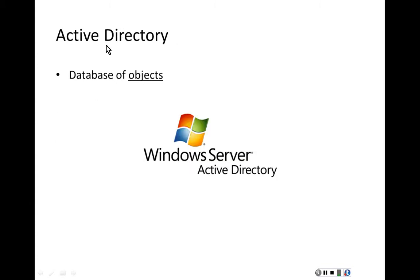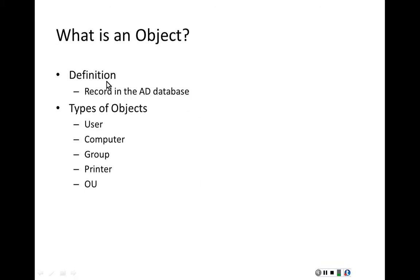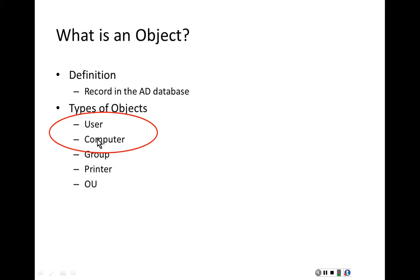Let's start out with Active Directory. Active Directory is a database of objects, and an object is defined as a record in the Active Directory database. You have user objects, computer objects, group, printer, and organizational unit objects. In this chapter, we are going to focus on user and computer objects.